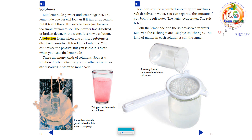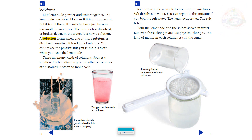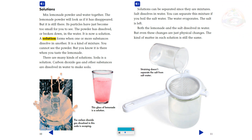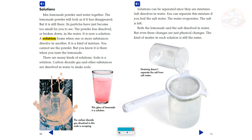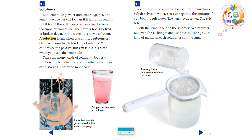Solutions: mix lemonade powder and water together. The lemonade powder will look as if it has disappeared, but it is still there. Its particles have just become too small for you to see. The powder has dissolved, or broken down, in the water. It is now a solution. A solution forms when one or more substances dissolve in another — it is a kind of mixture. You cannot see the powder, but you know it is there when you taste the lemonade.